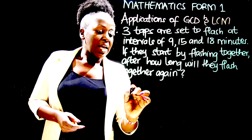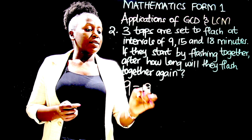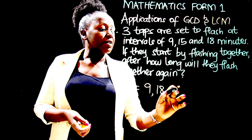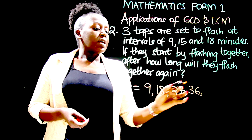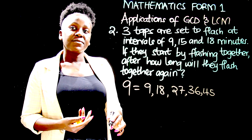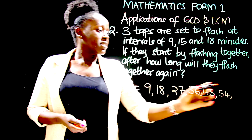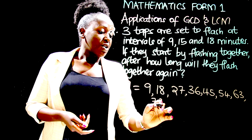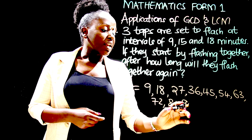Beginning with 9, let us list the multiples of 9: 9, 18, 27, 36, 45, 54, 63, 72, 81, 90. Let's go up to 10 multiples. Now let's check for 15.